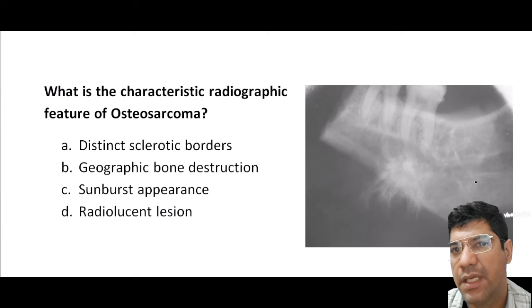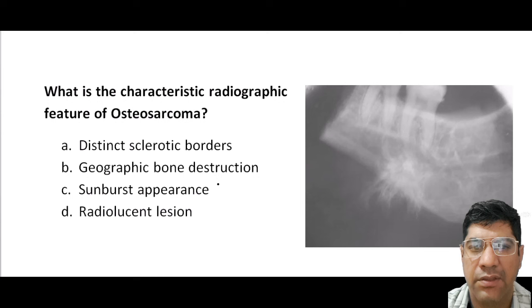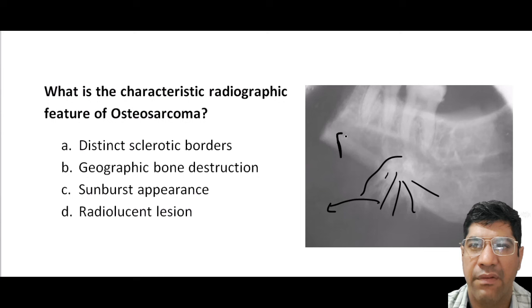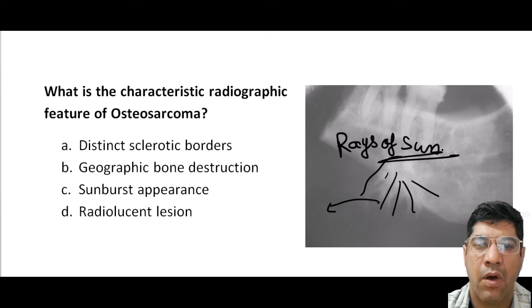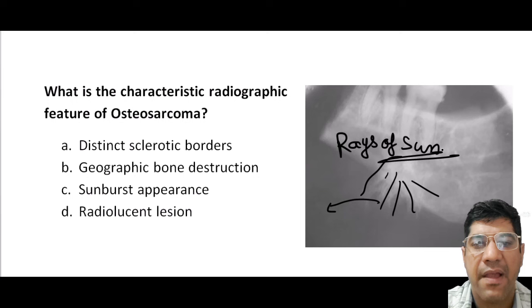Which is a characteristic radiographic feature of osteosarcoma? On an x-ray of bone affected by osteosarcoma, instead of smooth or normal bone structure, you see rays of light radiating outward from a central point — just like rays of the sun. This sunburst pattern is a hallmark of osteosarcoma. It is due to the aggressive and destructive nature of osteosarcoma, where cancerous bone cells grow rapidly and disrupt the normal bone structure.